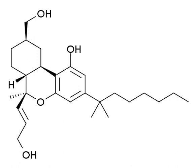AM4030 is an analgesic drug which is a cannabinoid receptor agonist. It is a derivative of HU210 which has been substituted with a 6-β-E-3-hydroxy-prop-1-anal group.